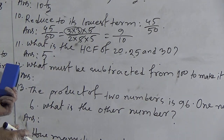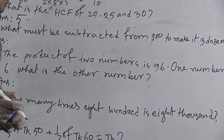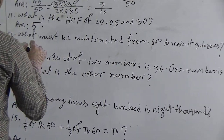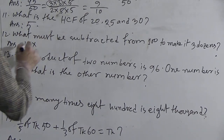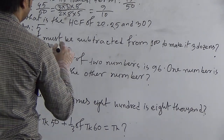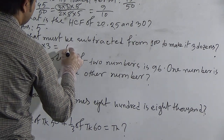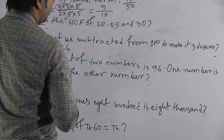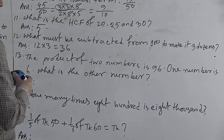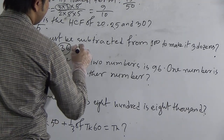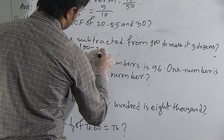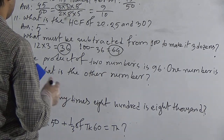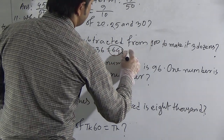Question 12: What must be subtracted from 100 to make it 3 dozens? One dozen means 12 items, so 3 dozens is 12 multiplied by 3, which equals 36. To make 100 into 36, we subtract 36 from 100, giving 64. Our required answer for question 12 is 64.